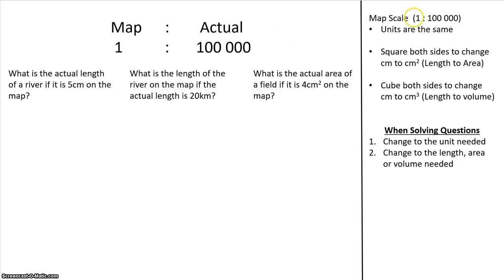There are some things to take note of. In any scale, the units are the same — so the 1 and the 100,000 are both in the same units. Usually for a map it is in cm, because one meter would be too big for a map.